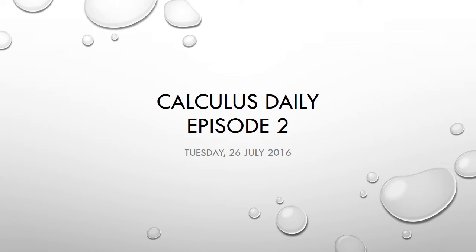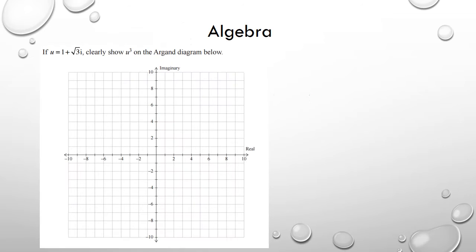So what they're asking you guys is if u equals to this, clearly show u cubed on this Argand diagram below. I'm going to show you the long way and the short way of doing this. Long method is because u is equal to 1 plus square root of 3i.